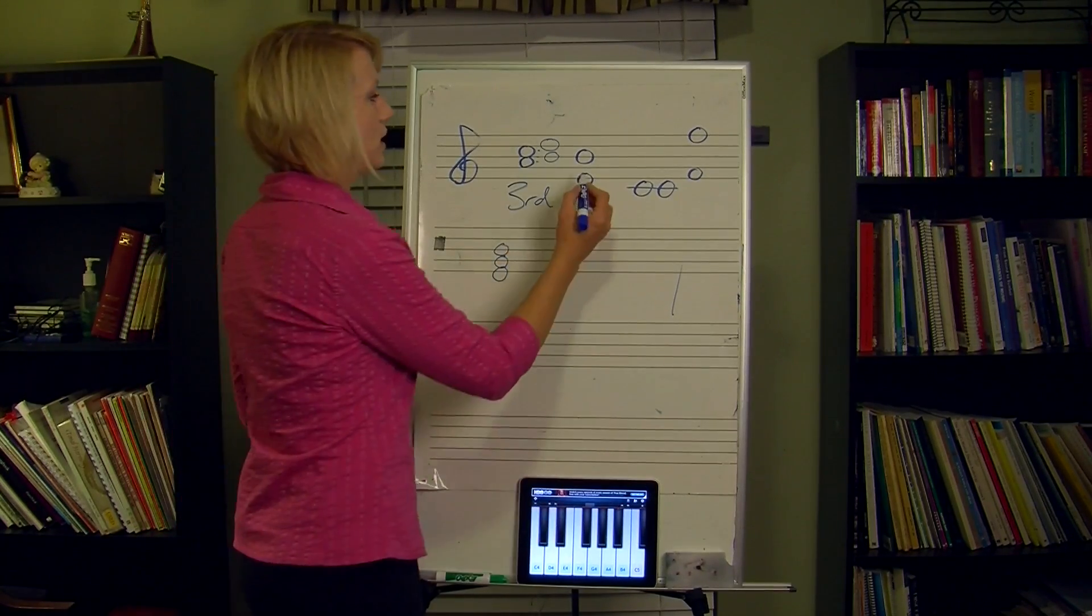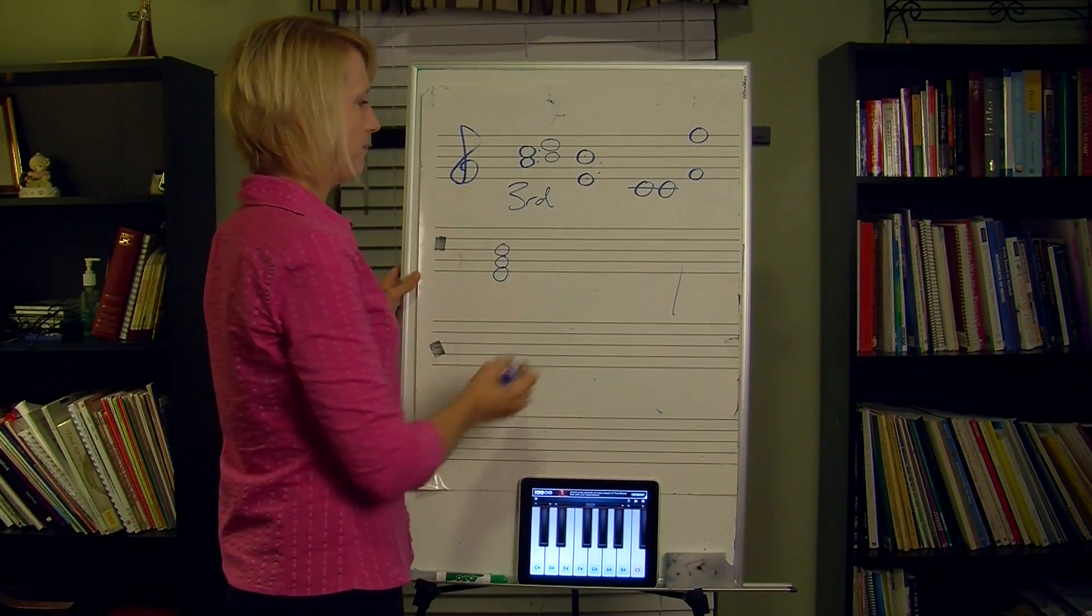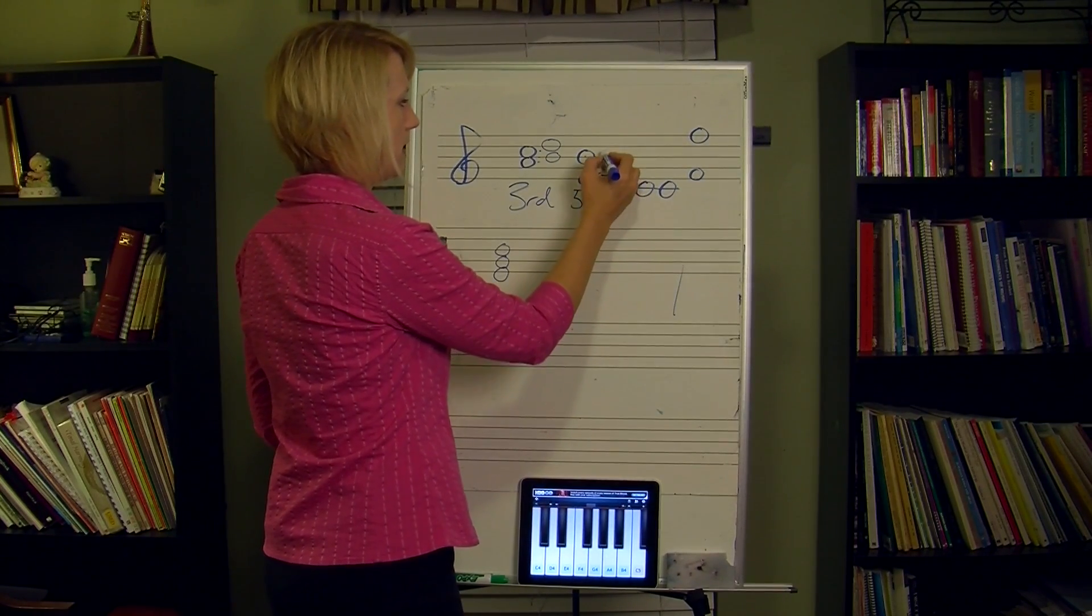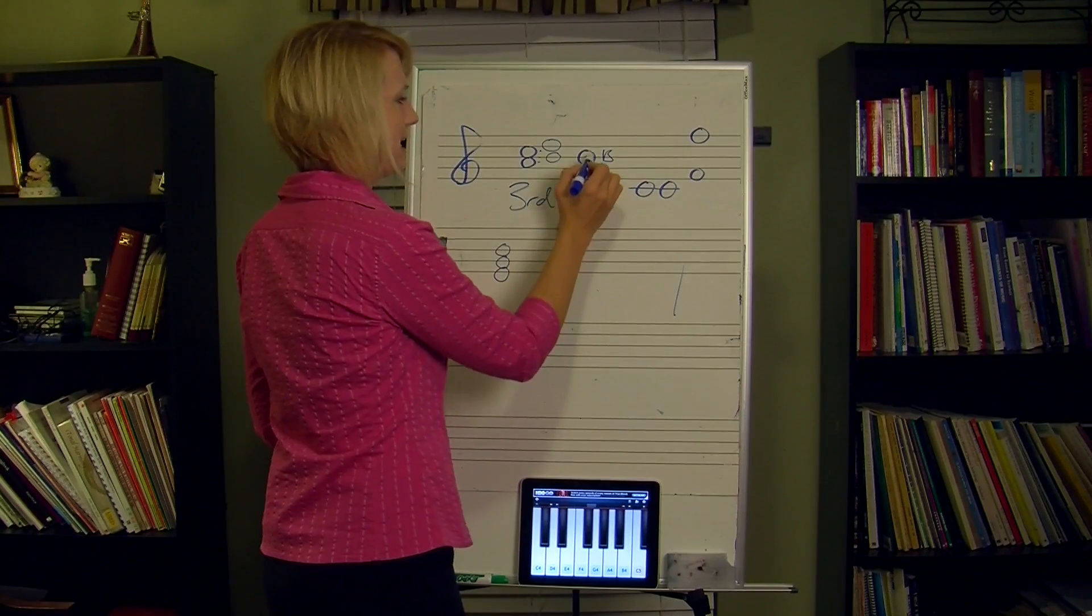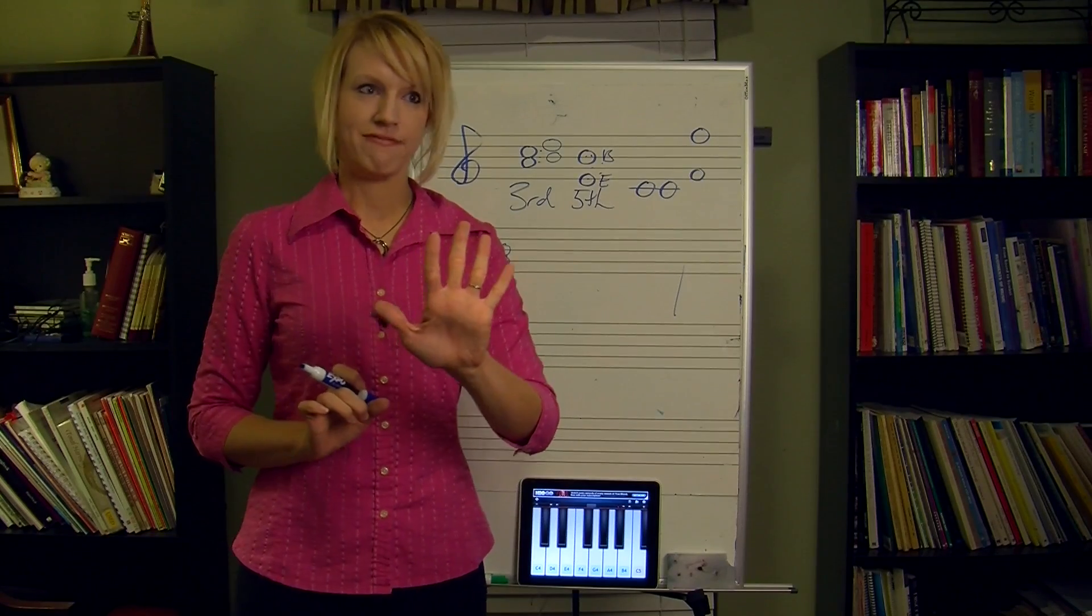Let's do the next one. So we count one, two, three, four. What is it? It's a fifth. Or if you did it with the letters, it would be from E to B. So E, F, G, A, B, makes our fifth.